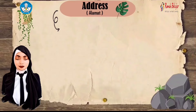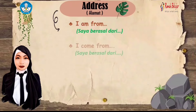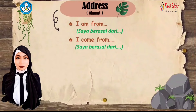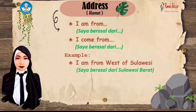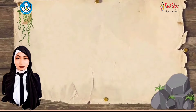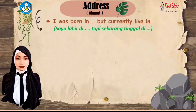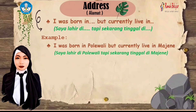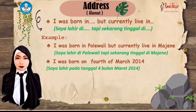After that, you can share about your address. For example: 'I am from [place]' or 'I come from [place].' For instance: 'I'm from West Sulawesi' or 'I come from West Sulawesi.' You can also say: 'I was born in [place] but currently live in [place].' For example: 'I was born in Polawali but currently live in Majene.' Note the difference between using 'in' and 'on.'